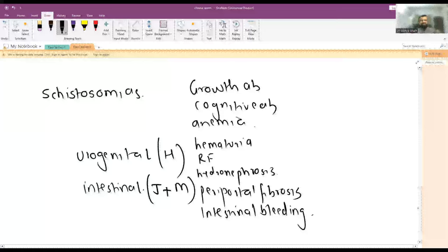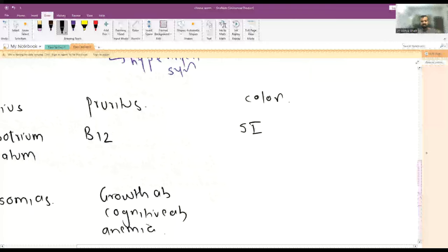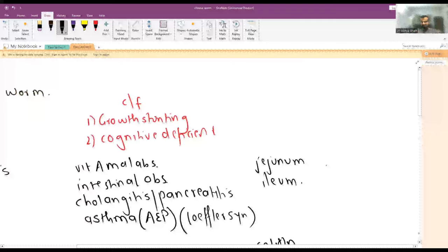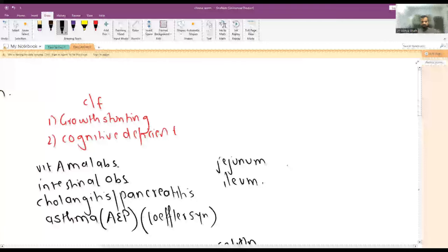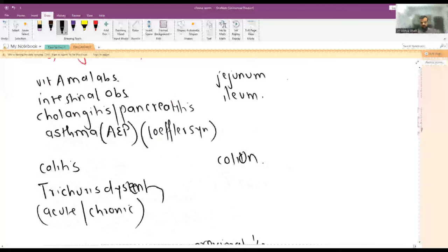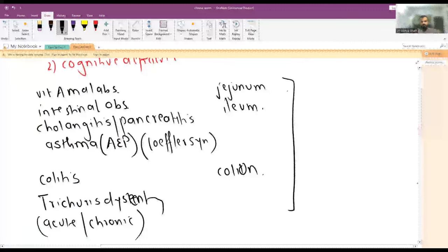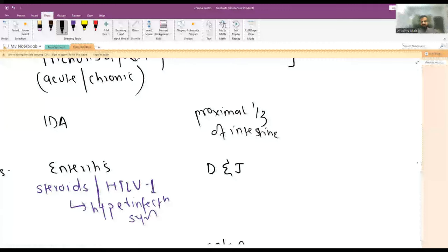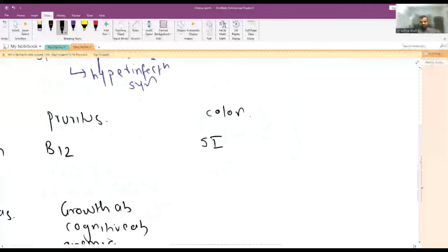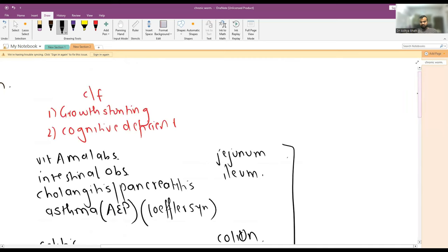Now how to treat these worms. Treatment of all the worms except Strongyloides and Diphyllobothrium latum - the drug of choice is albendazole 400 mg for three days, single dose or three days, or mebendazole 500 mg single dose.